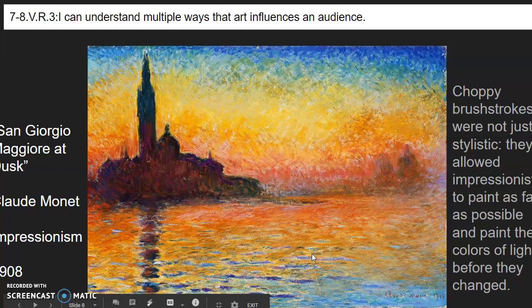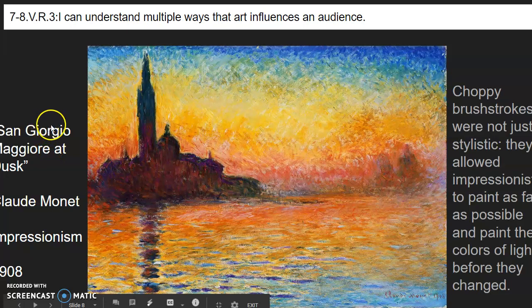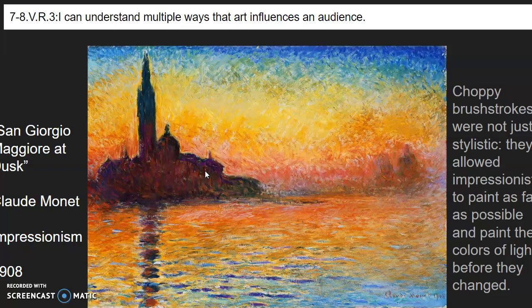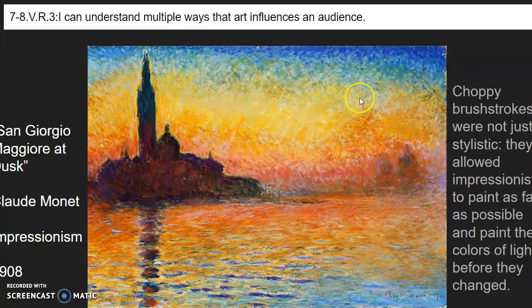He also painted other things. San Giorgio Maggiore at Dusk — I think this is just beautiful, it looks very rainbow-like to me. And you can really see the brush strokes; you can see exactly where his brush went. The realist painters did not like that — they wanted a painting to look very real.